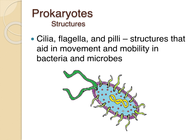Bacteria and microbes are the prokaryotes we're discussing in this unit. In this picture, the DNA would be that yellow swirl in the middle of the cell. The flagella would be the long green structures — those are the whip-like tails. Cilia and pili would be found on the sides; cilia are the little hairs that help it move through fluid.